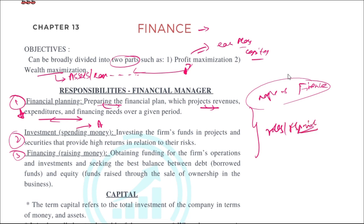A financial manager must also maintain the best balance between debt and equity. Debt refers to borrowed funds, while equity refers to funds raised through the sale of ownership of the business. Just remember these definitions for the exam.